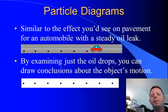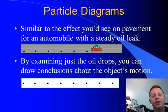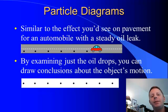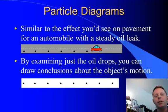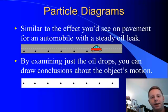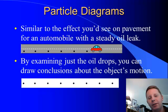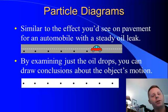We'll start off by talking about particle diagrams, sometimes known as dot diagrams or ticker tape diagrams. You can think about these as if you have an oil leak in your car and you drip a drop of oil at a specific interval, the same interval every time. If you looked at what had happened on the pavement later on and examined that oil drop pattern, you could tell a lot about what your car was doing.